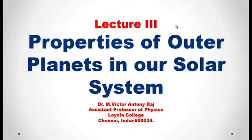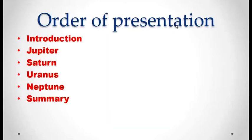Welcome to DTH channel, lecture 3 of Astronomy and Astrophysics. This lecture is about properties of outer planets in our solar system. I am going to present this lecture in the following order: introduction about the outer planetary system, Jupiter, Saturn, properties of Uranus, properties of Neptune, and finally the summary of the discussions we are going to have.